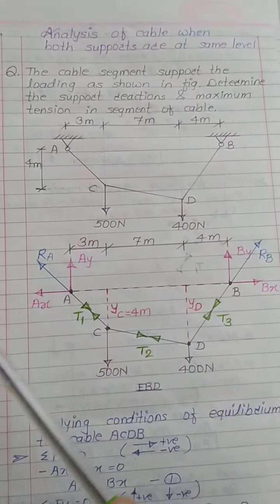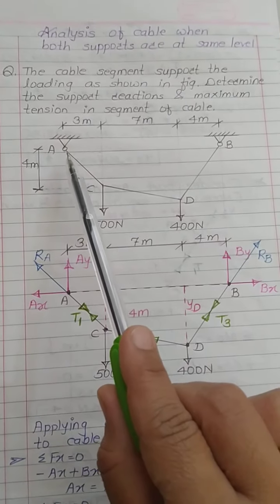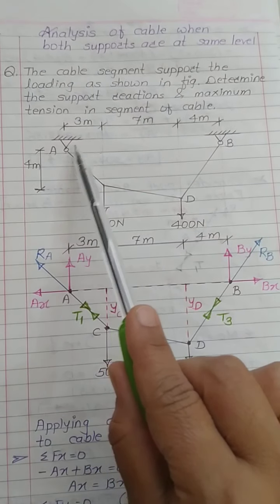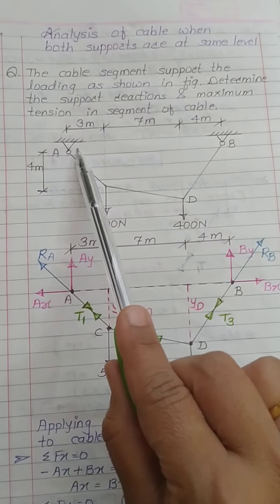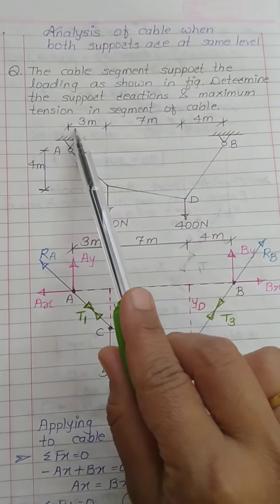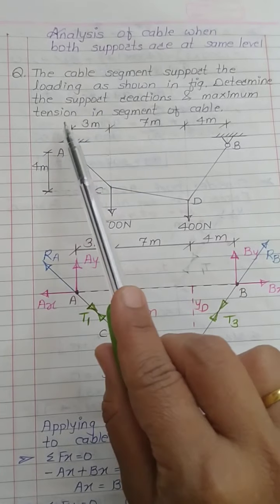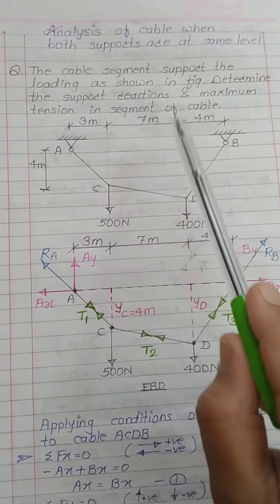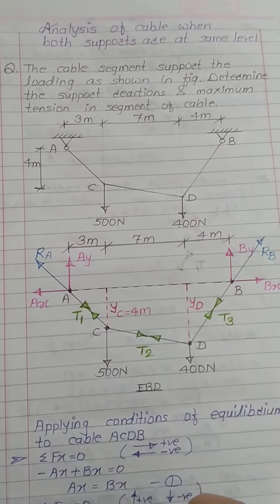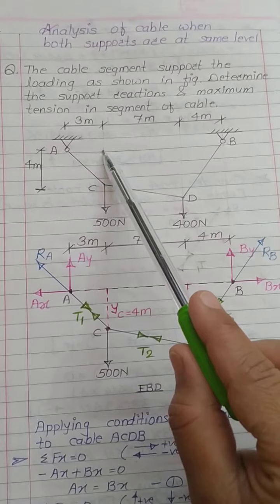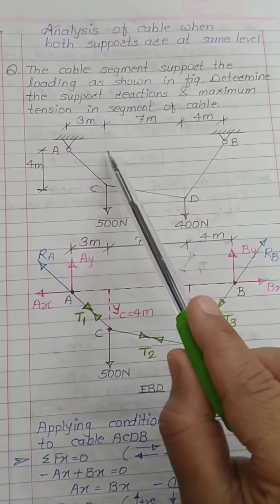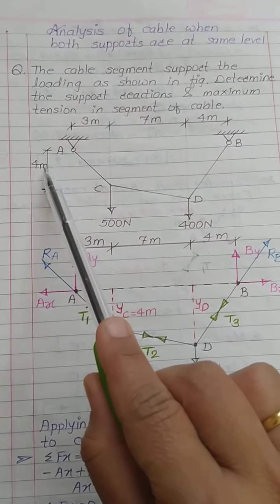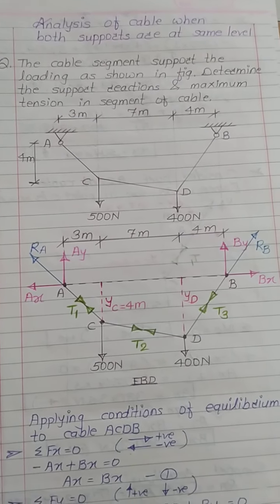The cable ACDB is supported at points A and B by hinge supports. The horizontal distance between A and C is 3 meters, between C and D it is 7 meters, and between D and B it is 4 meters. The sag at point C, which is yc, is given as 4 meters — that is the distance from point A down to C.